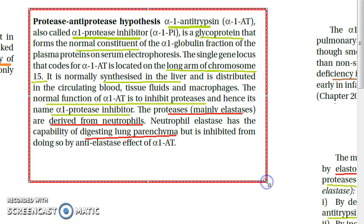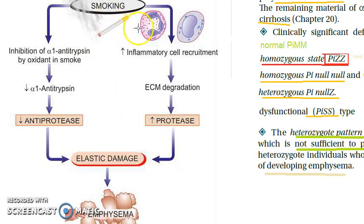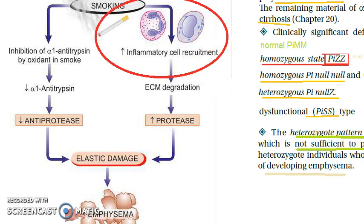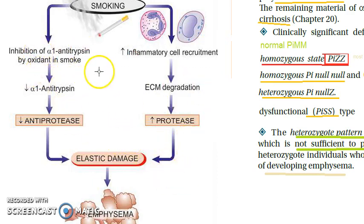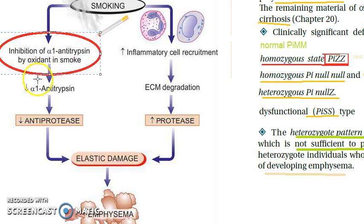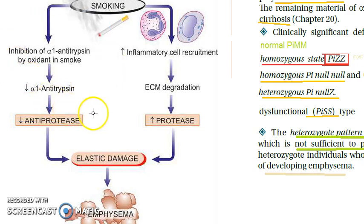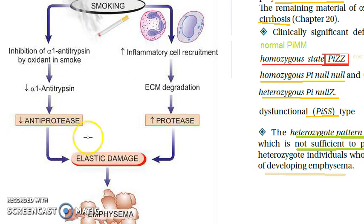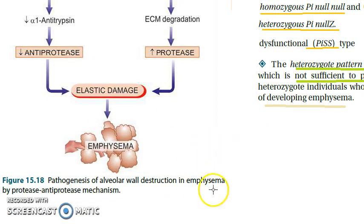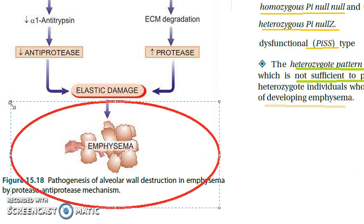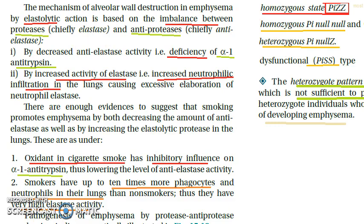You can draw a diagram for the protease anti-protease hypothesis: smoking causes more neutrophil recruitment and inflammation, so neutrophils increase and release more protease. Additionally, oxidants in cigarette smoke directly inhibit alpha-1 antitrypsin. With less anti-protease activity and more protease being produced, there is greatly increased elastase, causing elastic damage and resulting in emphysema.